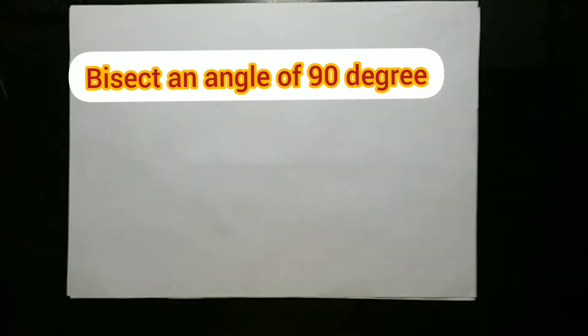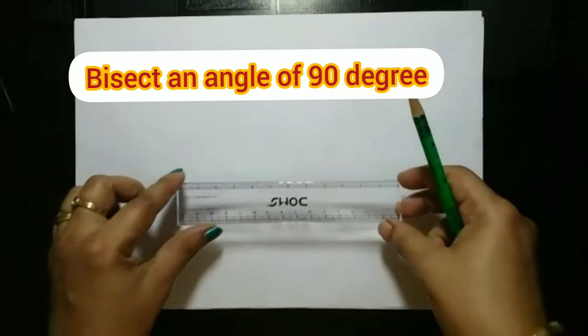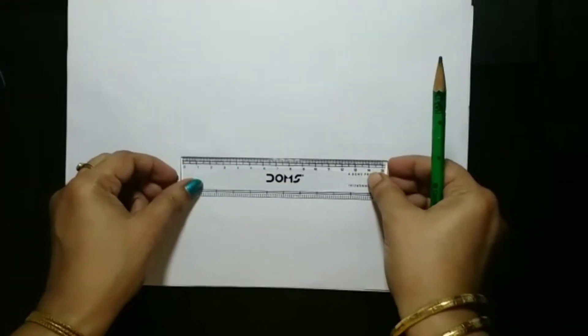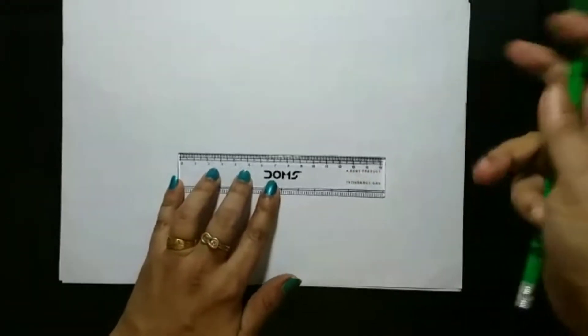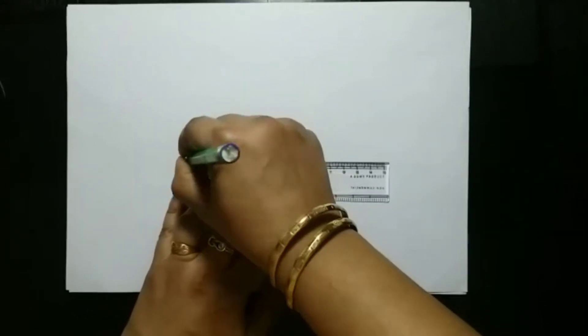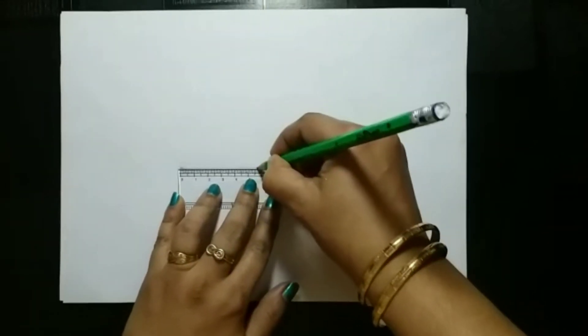Namaste children, I will show you how to bisect an angle of 90 degrees today. For that, first we have to draw a 90 degree angle using a protractor. The length I have used is 6 centimeters, so 0 to 6.